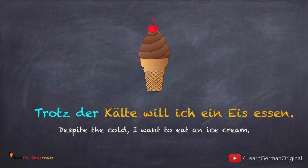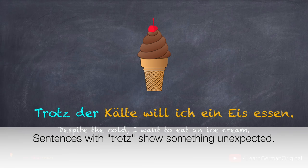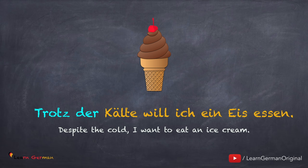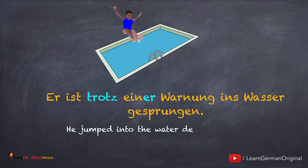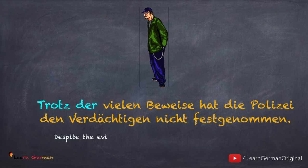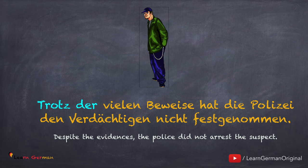Hier ist ein anderes Beispiel: Trotz der Kälte will ich ein Eis essen. Sätze mit 'Trotz' zeigen etwas Unerwartetes. Hier ist noch ein Beispiel: Er ist trotz einer Warnung ins Wasser gesprungen. Egal ob wir Definit-, Indefinit- oder Possessivartikel haben, benutzt man mit der Präposition 'trotz' den Genitiv. Aber bei Plural gibt es eine Ausnahme, genauso wie bei den Präpositionen 'wegen' und 'während'.